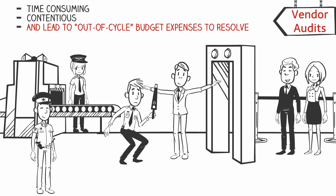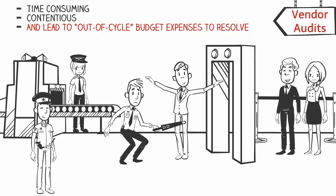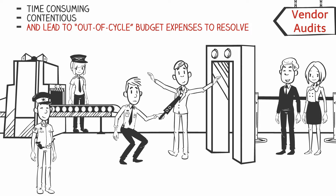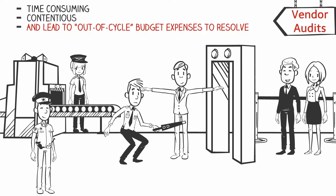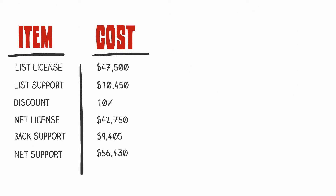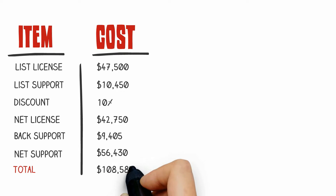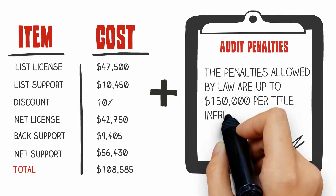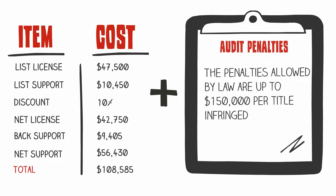Your organization has hardware and software from a multitude of vendors which have their own sets of standards and regulations. How are you sure all the vendors and audits are performed quickly and accurately? Let's take a very simple look at a database vendor audit. In this case, we found that we had one additional database installed over what we were licensed for. The costs in this instance were an additional $108,000 which we had not budgeted for. To make matters even worse, the law allows for penalties up to $150,000 for each title infringed.